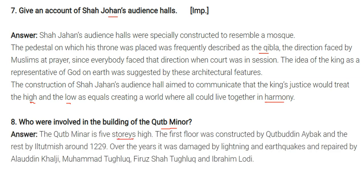The Qutub Minar is a five-story high structure. Its first floor was constructed by Qutubuddin Aibak, and the rest was completed by Iltutmish around 1229. Over the years it was damaged by lightning and earthquakes and was repaired by Alauddin Khilji, Muhammad Tughlaq, Firoz Shah Tughlaq, and Ibrahim Lodi.